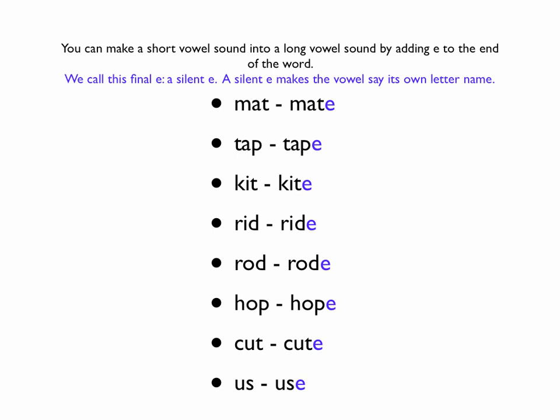'Cut,' K-U-T. U is the short vowel sound for U. If we put a silent E on the end, it becomes 'cute,' C-U-T-E. And 'us,' U-S — here comes 'use.' Use.